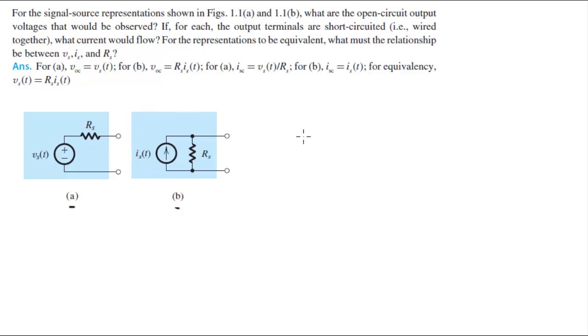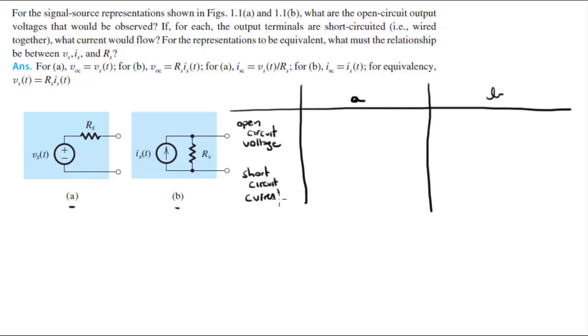So let me make a little table. This is A, this is B. This is open circuit voltage and this is short circuit current for each one, and I'm going to explain why.